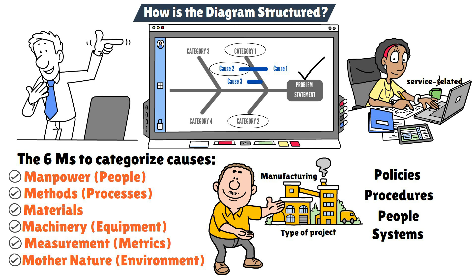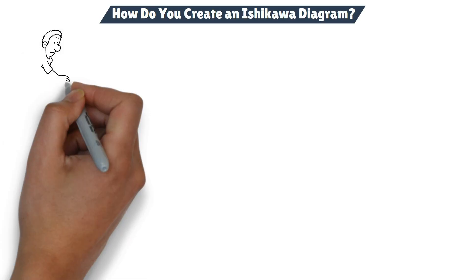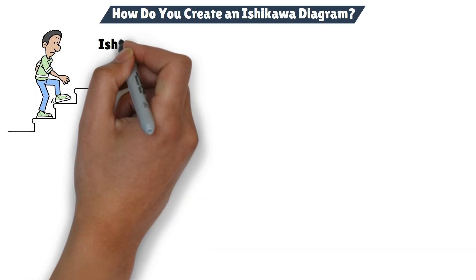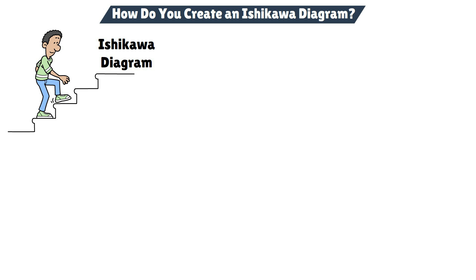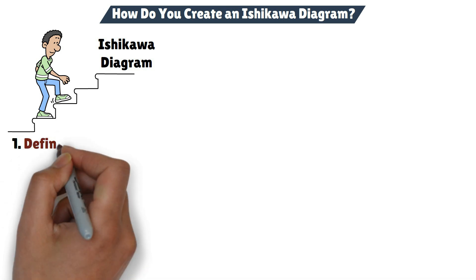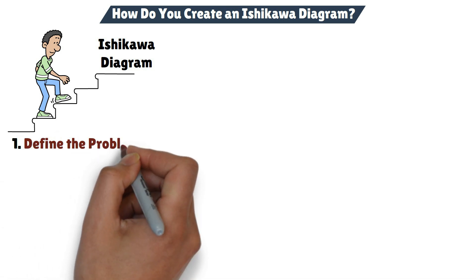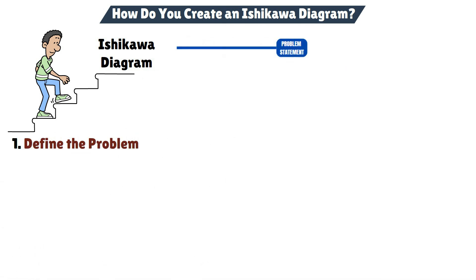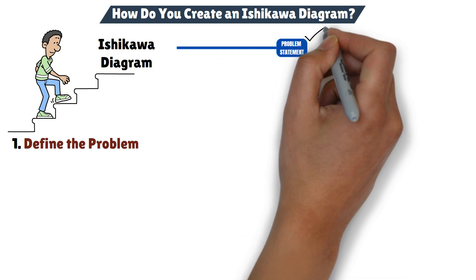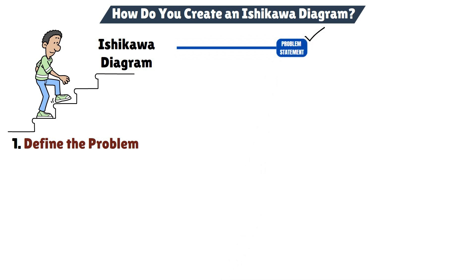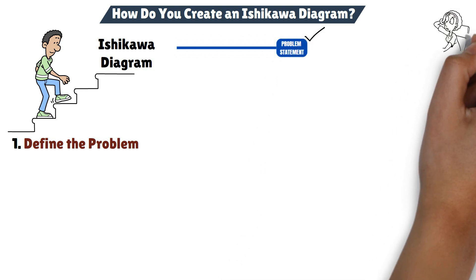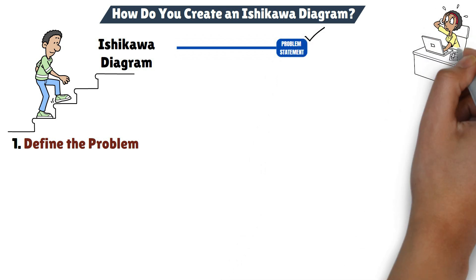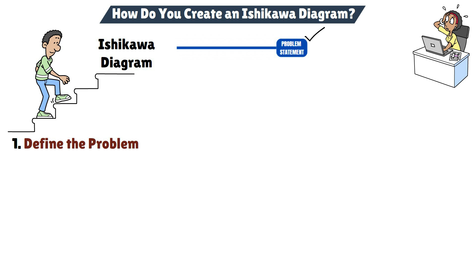It can be adapted to fit almost any type of project or problem. Now, let's walk through the steps to create your own Ishikawa diagram. Step 1: Define the problem. Start by clearly defining the problem you're facing and place it at the head of the diagram. Be as specific as possible — a vague problem definition will only lead to vague solutions.